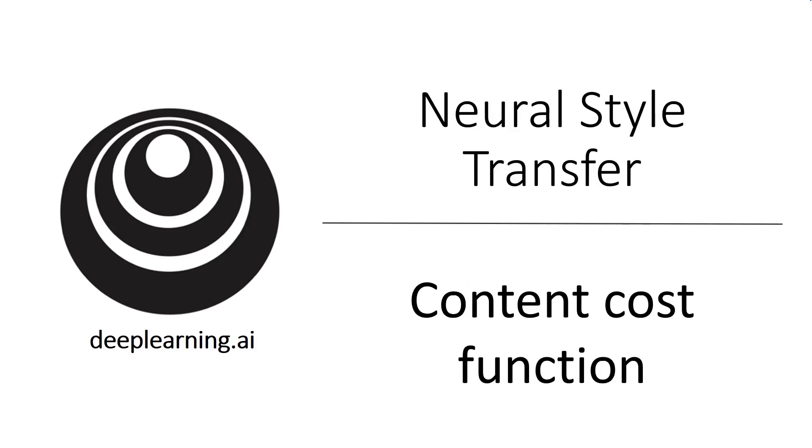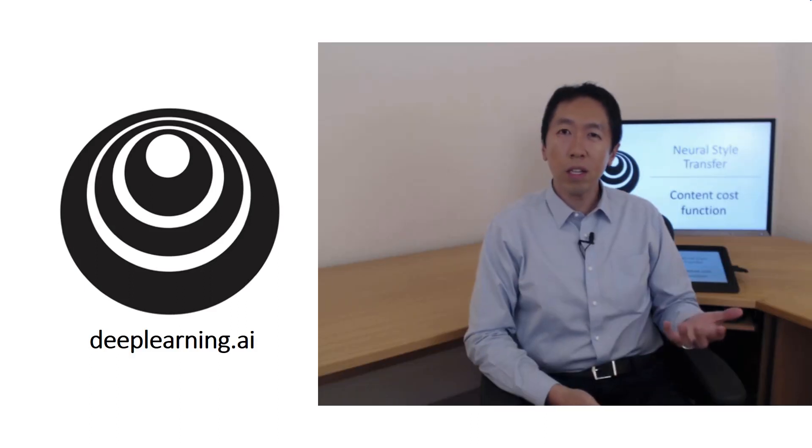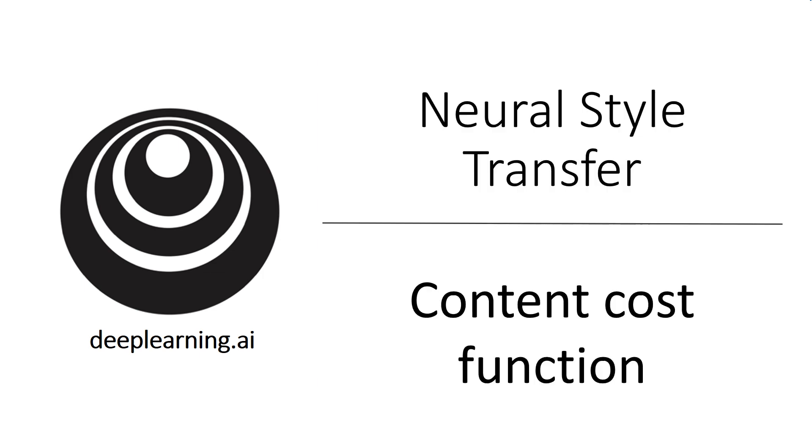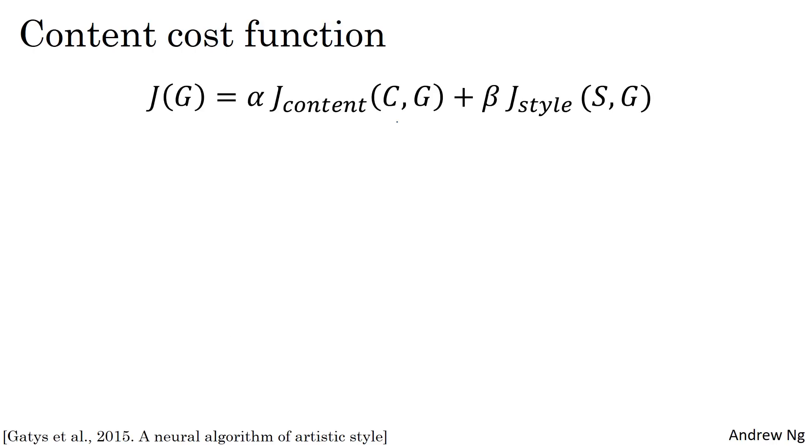The cost function of the neural style transfer algorithm has a content cost component and a style cost component. Let's start by defining the content cost component. Remember that this is the overall cost function of the neural style transfer algorithm. So let's figure out what the content cost function should be.